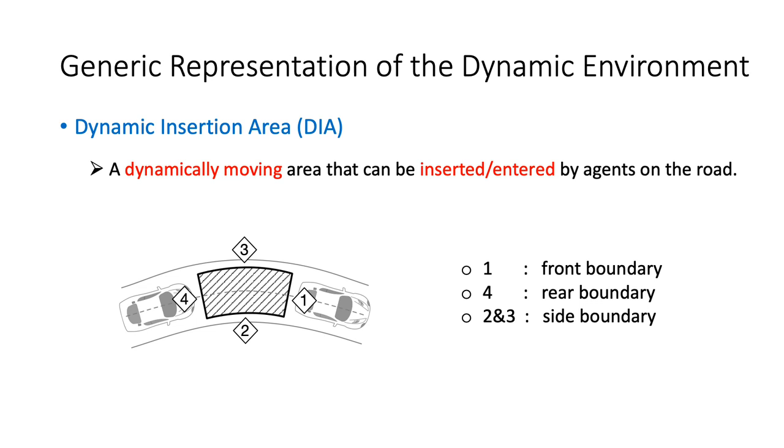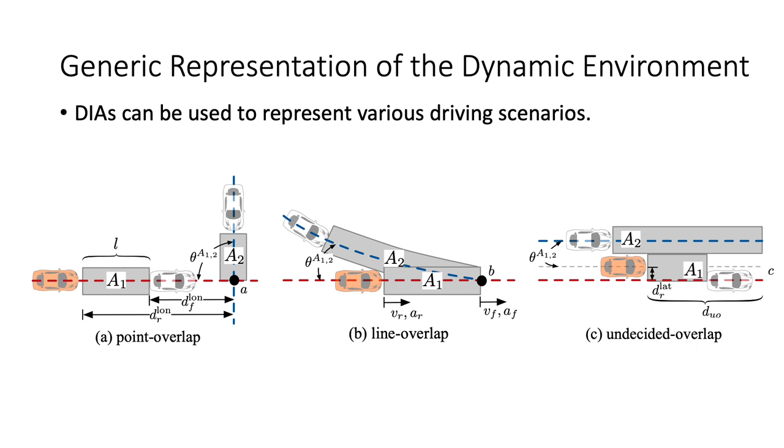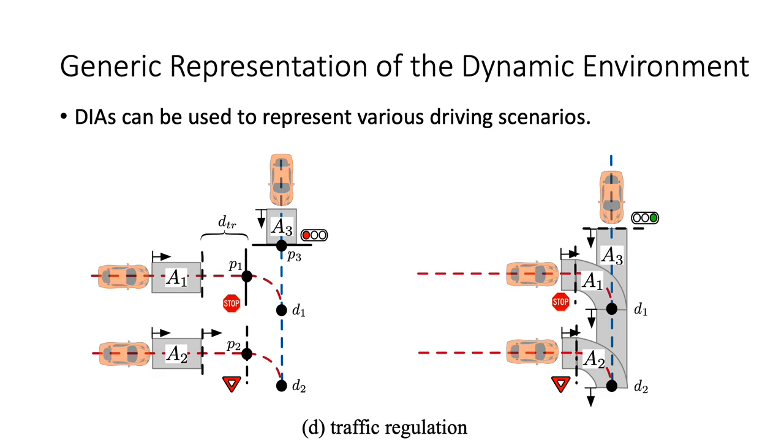The front and rear boundaries of a DIA are usually formulated by road entities. But the boundaries can also be any obstacles or predefined bounds based on traffic rules and road geometry. Therefore, under any driving situations, we can extract DIAs and utilize them to represent various dynamic environments, including different road structures and traffic regulations.